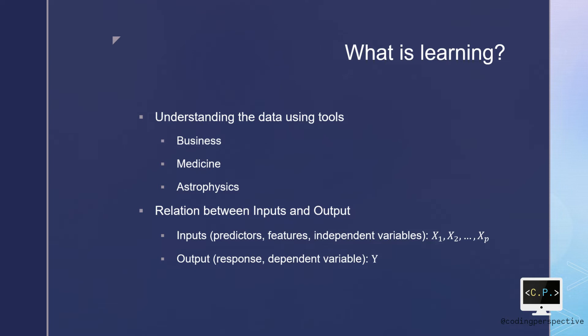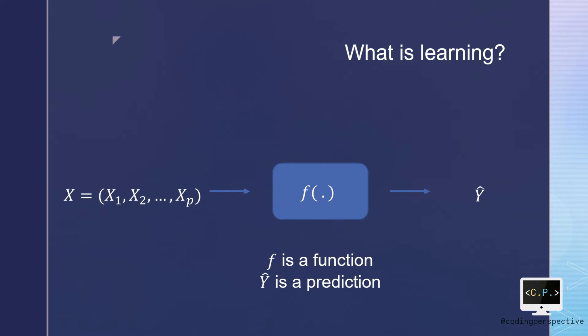For the outputs, we generally use the name response or dependent variable showing them as y. More generally, suppose that we have observation responses as y and we have p many independent variables. We assume that there exists a function f that takes x as an input and it outputs y hat as the predictions of y values.